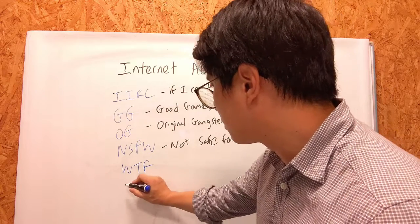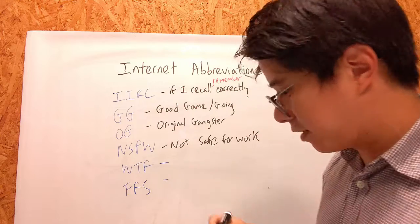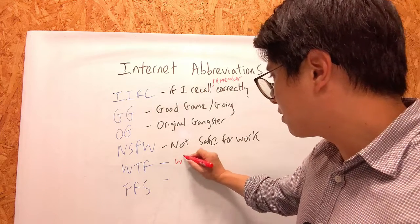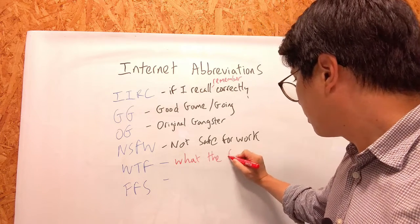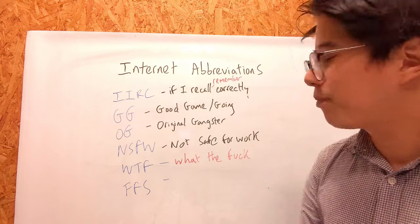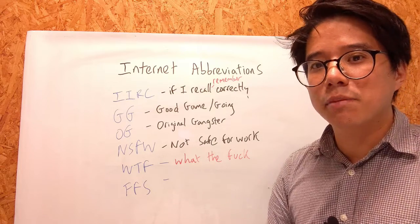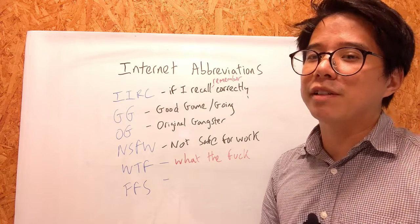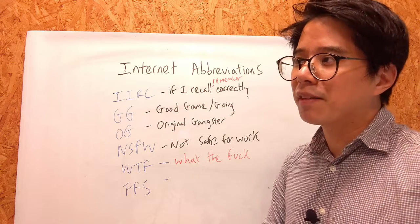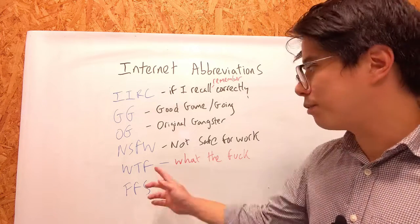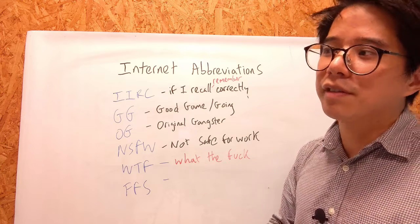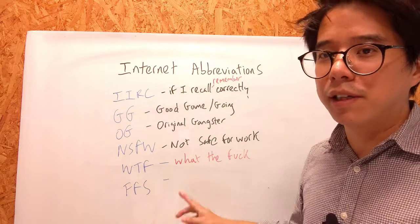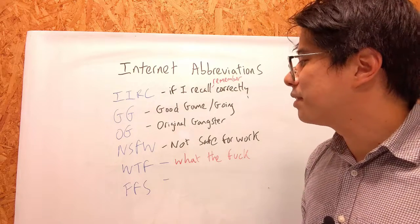The first bonus abbreviation is WTF, which stands for what the fuck. You use this when you're really surprised by something, or shocked — dumbfounded. Like, oh, this is a really big surprise, what happened? What the fuck! You'll see it on social media. People may use the abbreviation because they don't want to write out the swear word, but they are kind of swearing. It's used to express surprise.